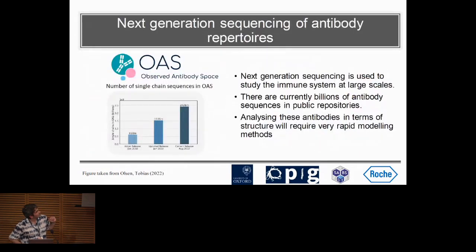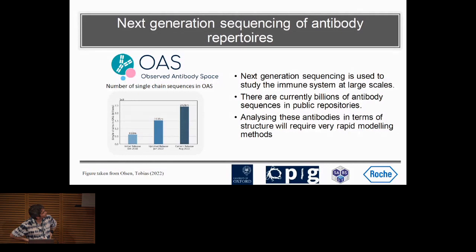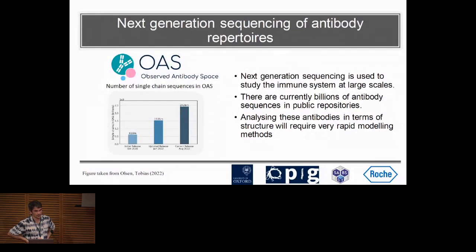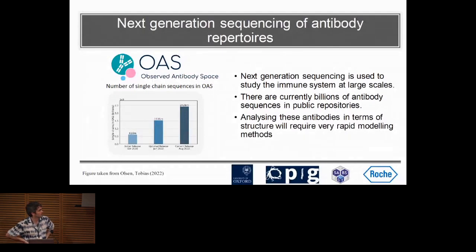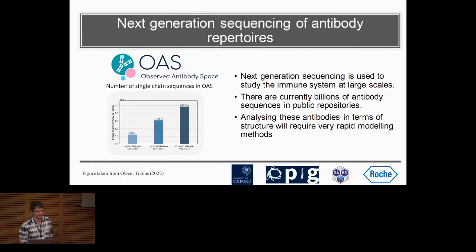In the case of antibodies specifically, next-generation sequencing is being used routinely to analyze the immune repertoire, and each of these studies will generate millions of sequences. Databases like OAS compile these sequences — I think OAS now has over two billion sequences. So trying to predict structures with AlphaFold just becomes computationally impossible. But analyzing antibodies in terms of structure provides way better insights on their function and what they can bind to, so having the structure is very interesting.